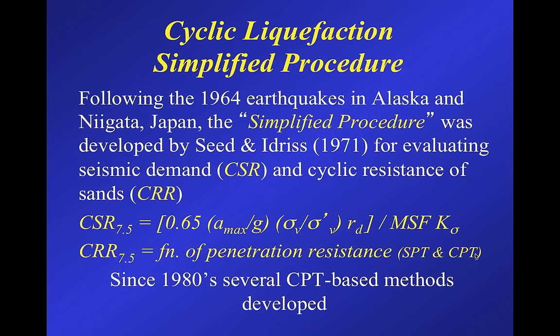The procedure generally followed is often referred to as the simplified procedure, following the earthquakes in Alaska and Niigata, Japan in the early 1960s. Professors Seed and Idriss back in the early 1970s suggested an approach where you first evaluate the seismic demand as the cyclic stress ratio (CSR), then look at the resistance of the soil — the cyclic resistance ratio (CRR) — and compare the two. The simplified formula estimates CSR as a function of peak ground acceleration, the ratio of total to effective stress, and a stress reduction factor, all normalized to a magnitude 7.5 earthquake at one atmosphere effective overburden stress.